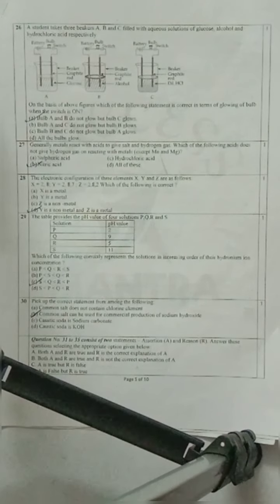Question 28: The electronic configuration of three elements X, Y, Z are as follows. Which of the following is correct? From the electronic configuration, we need to determine. Option D is correct, where Y is a non-metal and Z is a metal.